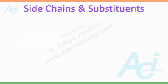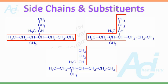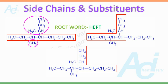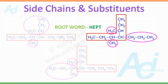What is the role of side chains and substituents in the selection of the parent chain? Look at the following molecule — there are three chains of equal length, with 7 carbons in each case. Therefore, hept must be the root word. The question is which one is the parent chain. As mentioned, the parent chain must contain as many side chains and substituents as possible. Looking at the three cases, there are two substituents in the first case, three in the second case, and two in the third case. Hence the second chain must be taken as the parent chain.